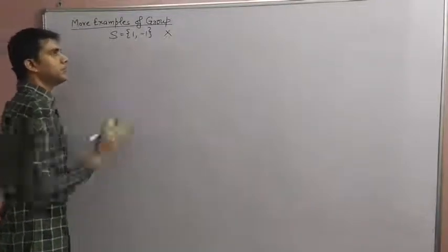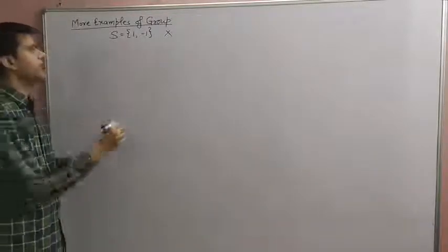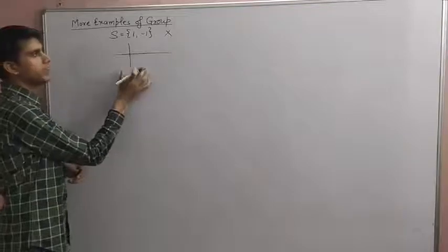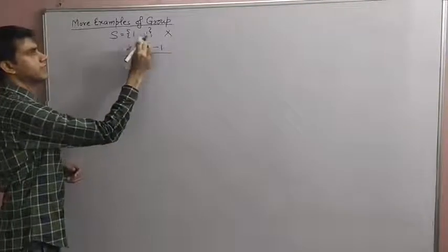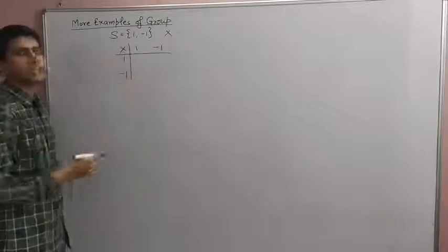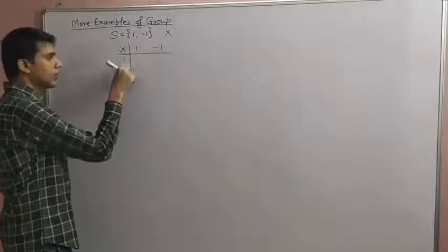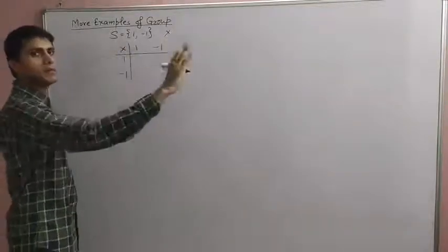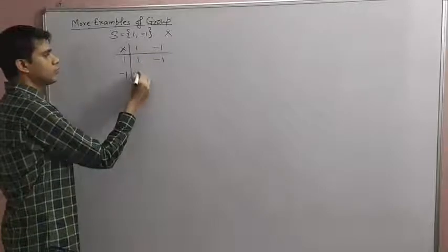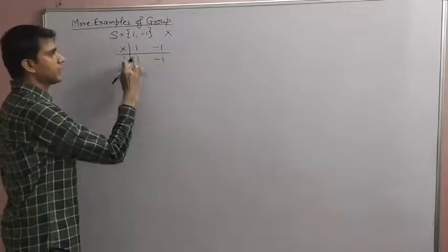We define multiplication here as a binary operation, and to check the group properties we make a composition table. The elements of the set are arranged in the first row and first column. Multiplying: 1×1=1, 1×(-1)=-1, (-1)×1=-1, and (-1)×(-1)=1.